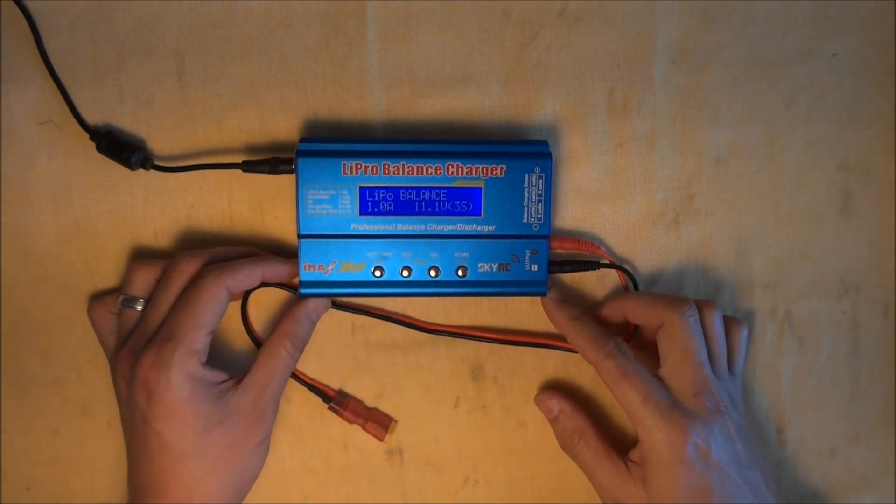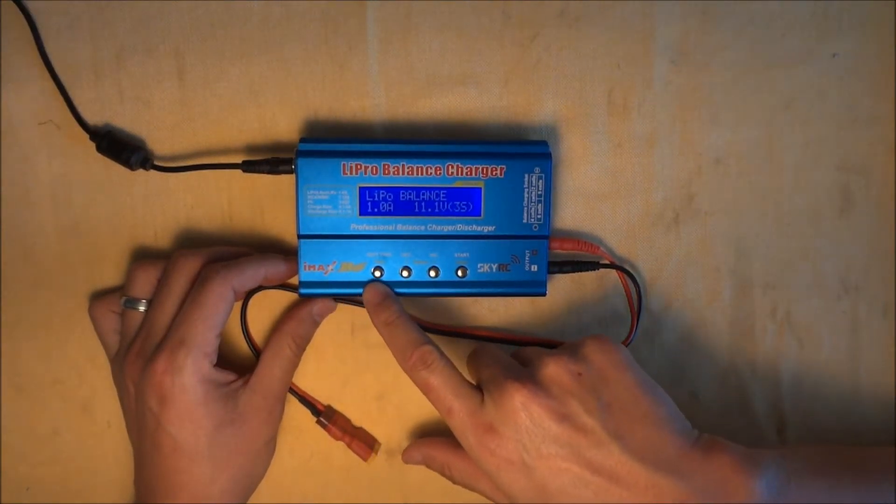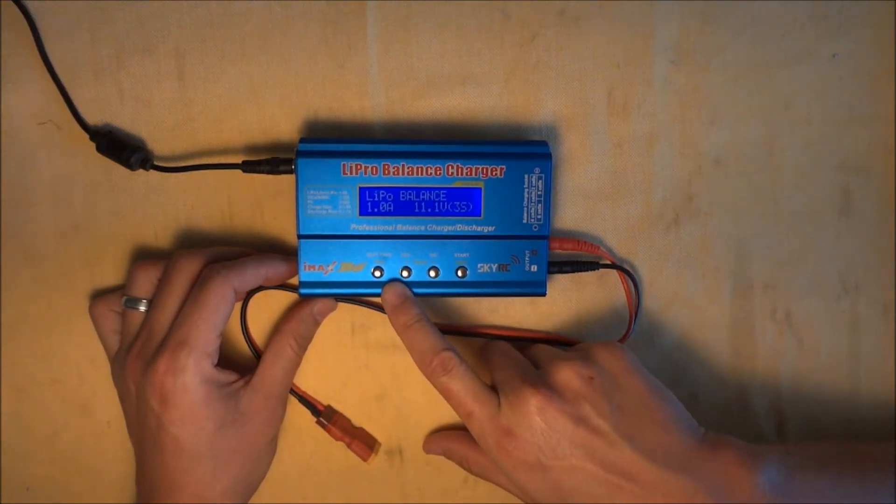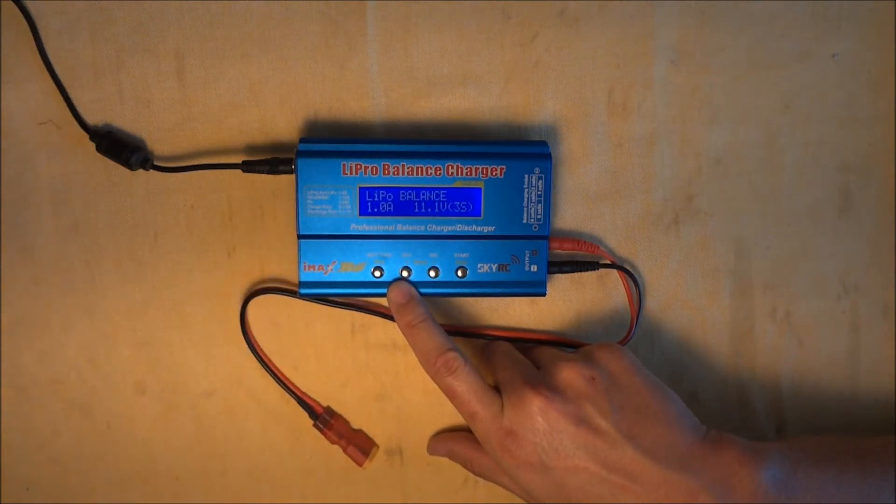Okay, this is the charger that we use for our lipos for Nerf applications. It's an IMAX B6, so it's a four button charger, it does multiple things. It does lipos, NiCADs, NIMH batteries, and lead acid batteries.